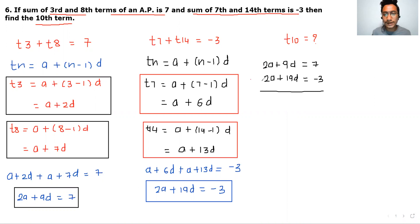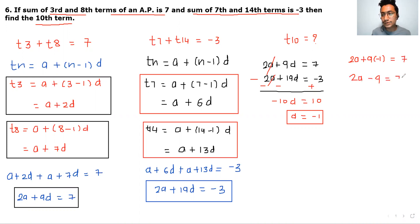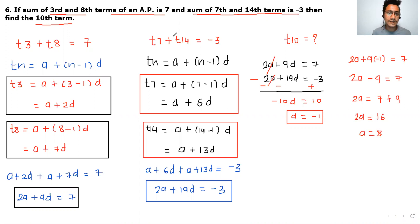Subtracting the first equation from the second: minus 10D equals 10, so D equals minus 1. Substituting D equals minus 1 into the first equation: 2A minus 9 equals 7, so 2A equals 16, therefore A equals 8.